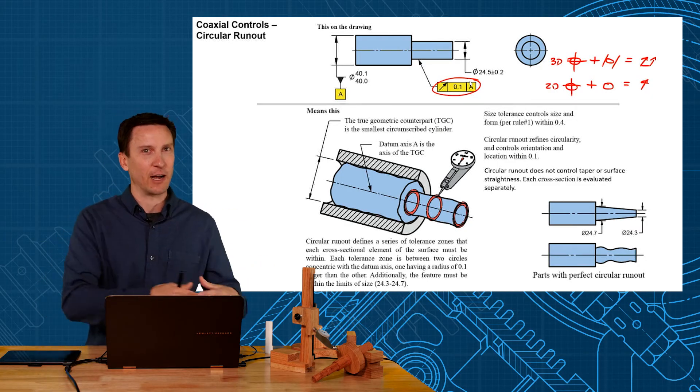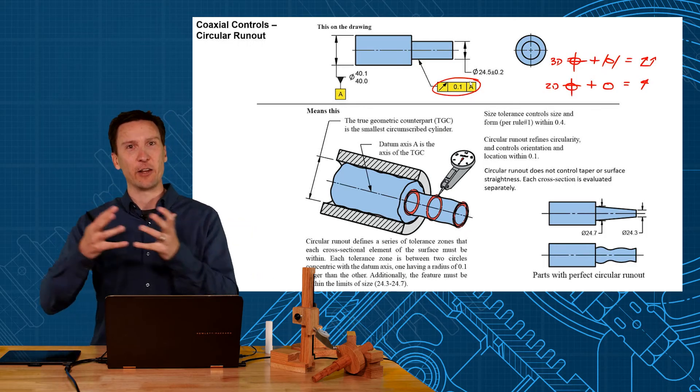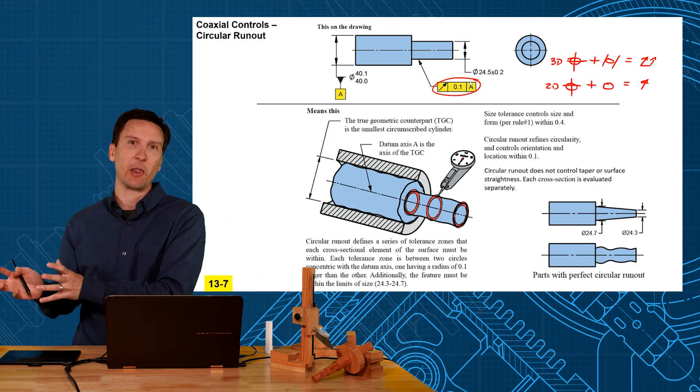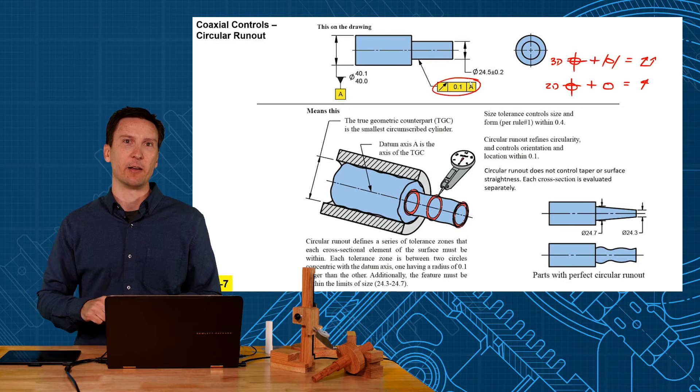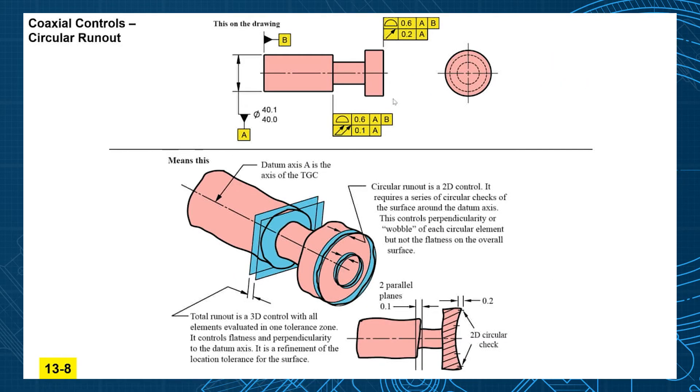I don't tell you how to measure it. I tell you what I functionally need. Then inspection is kind of come up with their plan the best way to measure that and with the least amount of cost involved. I want to show one more way that runout can be used. It can be used on surfaces at right angles to a datum axis. Here I have a datum axis A on this surface and a datum B on the back.